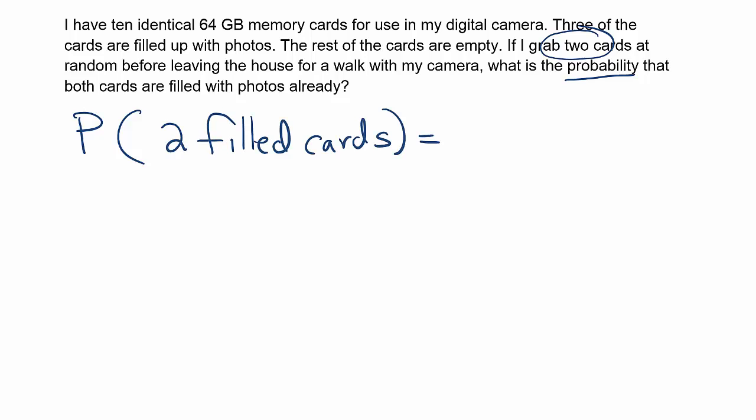There's something else I want you to notice about this problem: both of my selected items are behaving the same here. That's important. If you're going to use the pure multiplication rule of probability, you have to have all the items that you select behaving the same way. What I mean by that is that anytime you select more than one item, you're going to be using multiplication in the process of finding the probability.